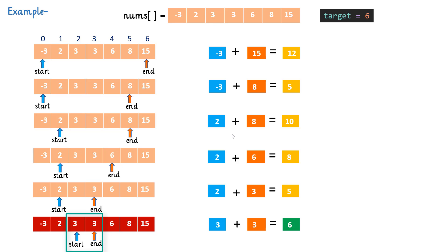There are two conditions when we should break the loop: when both pointers meet, and when the condition is satisfied. In our case, both pointers met and the condition was satisfied. We must ensure we handle this otherwise there will be an infinite loop. We traverse the array using two pointers until start is less than end — start should not cross end and end should not cross start.